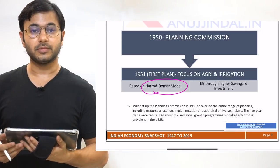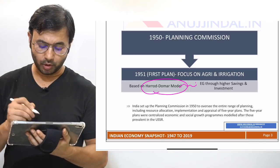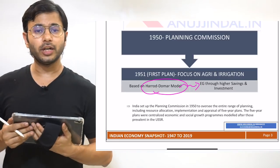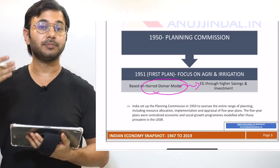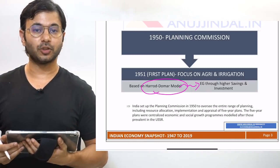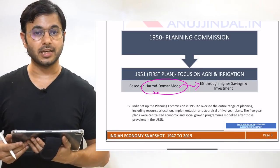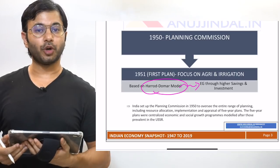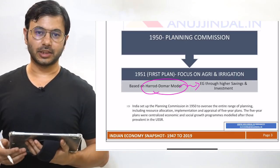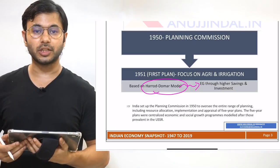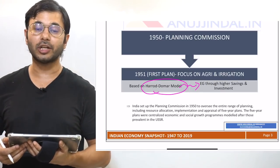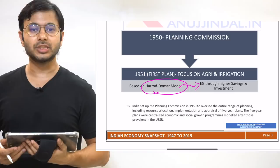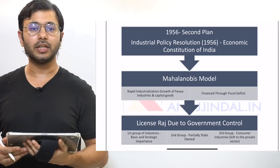It was the Harod-Domar Model which created the platform of the first five-year plan. According to this model, economic growth can be achieved by focusing on two things: savings ratio and capital output ratio. If a country has high savings, there is more money for investment and therefore more economic growth. If the capital output ratio is high, the output enjoyed per unit of capital input is very high. Since agriculture was the main contributor to India's GDP, the focus was on modernizing agriculture through improved irrigation methods. However, this model was replaced in 1956 when the Mahalanobis Model was adopted.